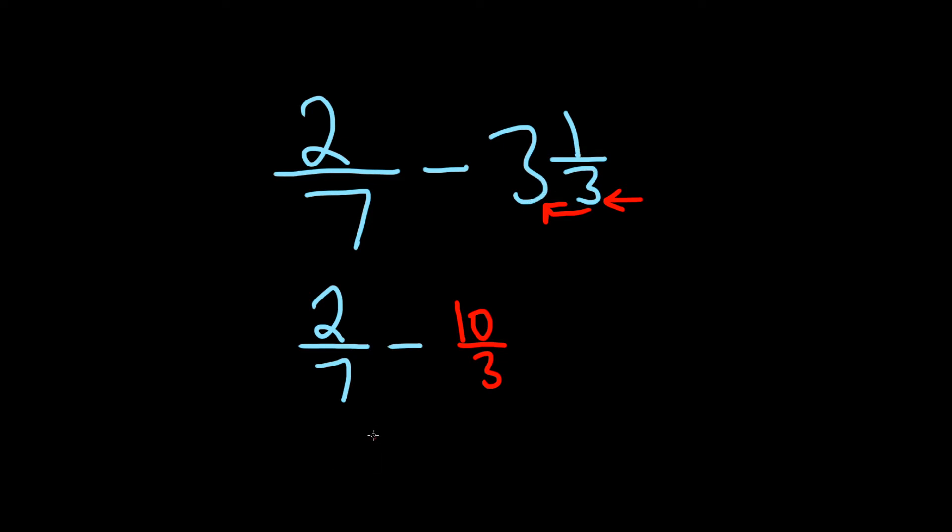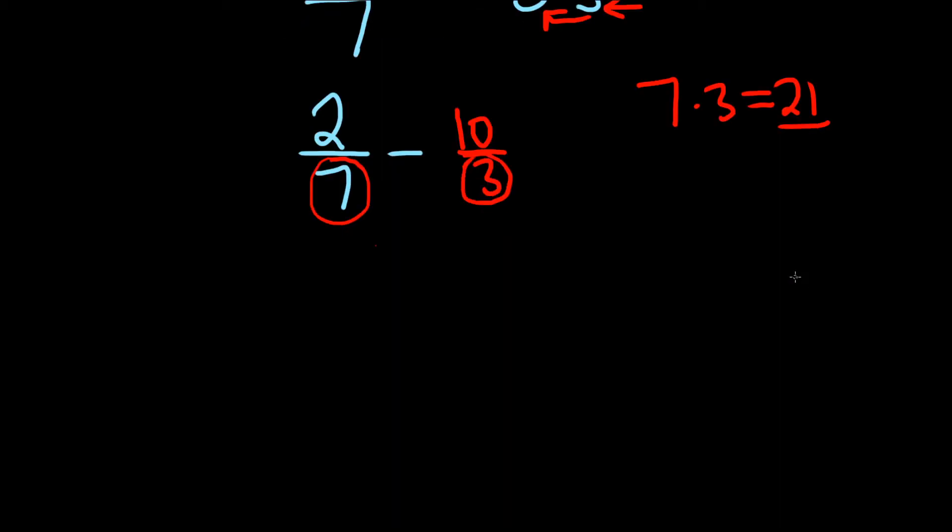And we're still not done because now the denominators are different. So you can't subtract fractions when these numbers on the bottom are different. They have to be the same. So what we have to do is we have to find what's called a common denominator. We can do that simply by multiplying these. 7 times 3 is 21, so that's going to be our common denominator.